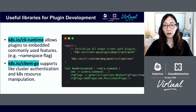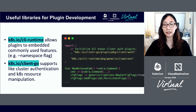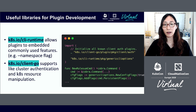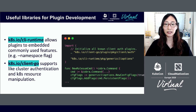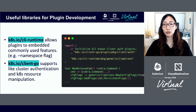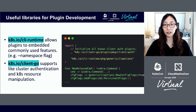It sounds hard to implement from scratch, but there are libraries to make development easier. For example, you can use CLI Runtime to easily define commonly used arguments like namespace and kubeconfig. Also, controller-runtime supports many features such as cluster authentication and Kubernetes resource management.